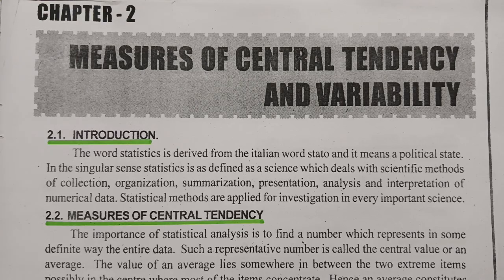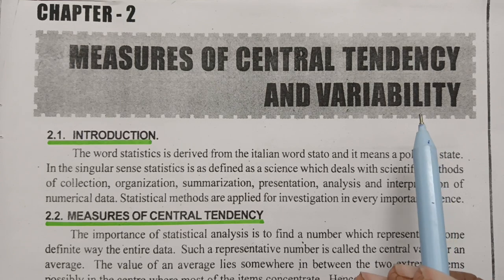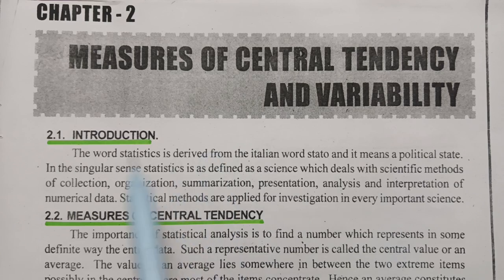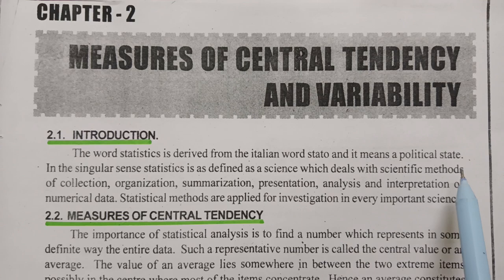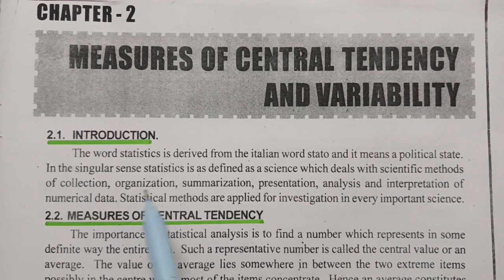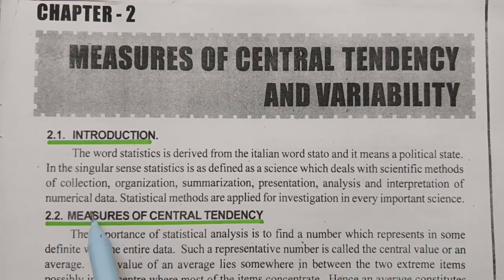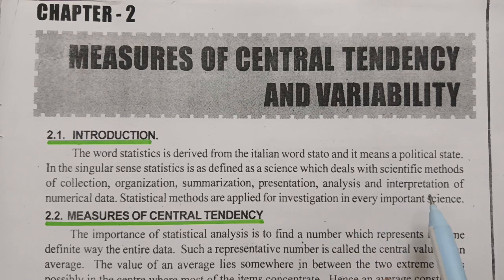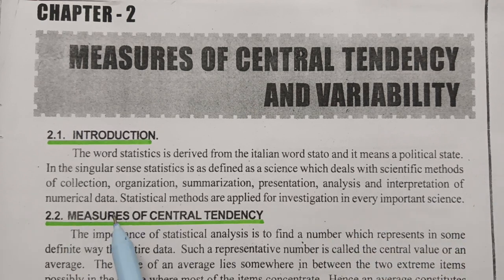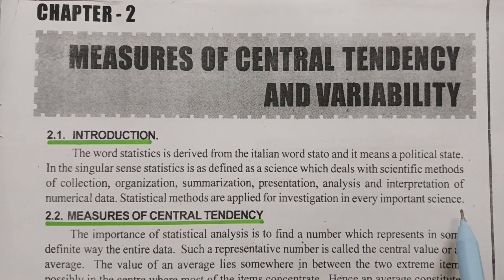Today's video is from the second chapter, that is the measures of central tendency and variability, and this topic is from probability and statistics. The word statistics is derived from an Italian word 'stato' and it means a political state. In the singular sense, statistics is defined as a science which deals with the scientific methods of collection, organization, summarization, presentation, analysis and interpretation of numerical data. Statistical methods are applied for investigation in every important science.